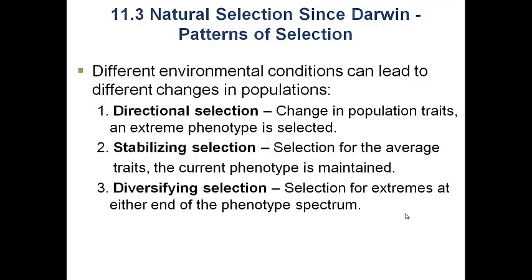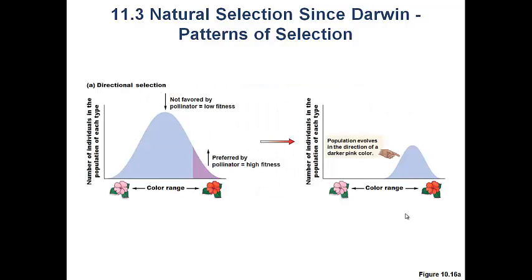We want to briefly talk about different types of selection. We have three different types of selection observed in the natural world: directional selection, stabilizing selection, and diversifying selection. These are all observed, though not all at the same frequency, in the natural world.